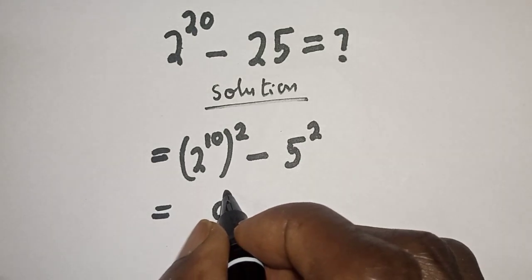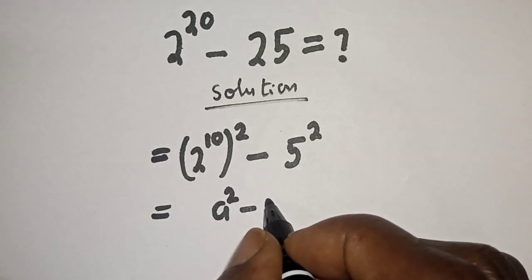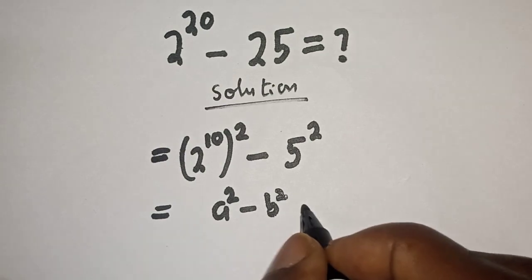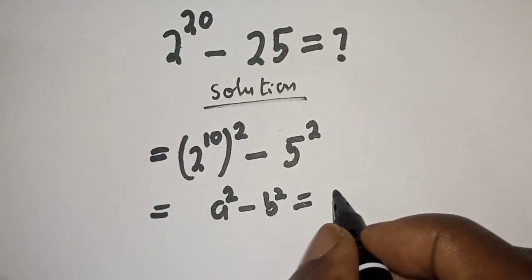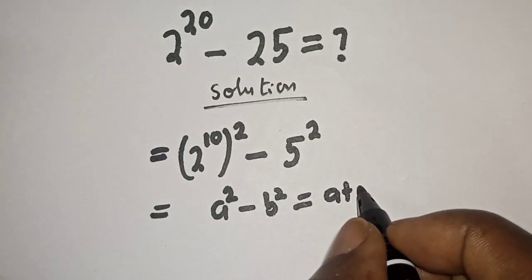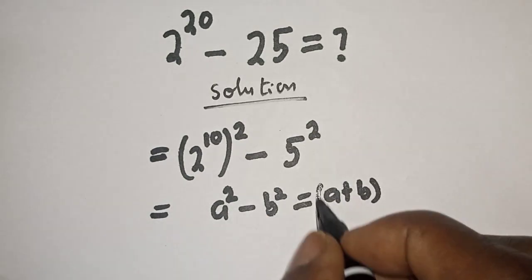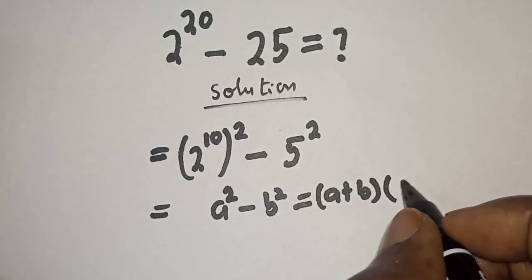Take note of this rule that if you have a raised to power 2 minus b raised to power 2, this is equal to a plus b bracket a minus b.